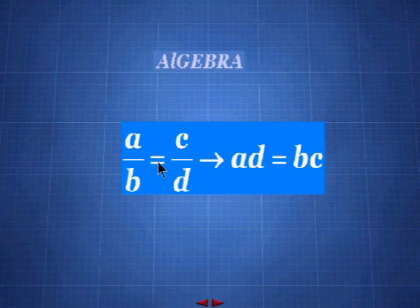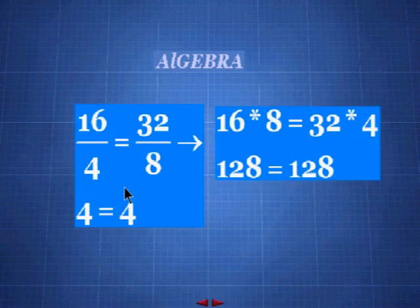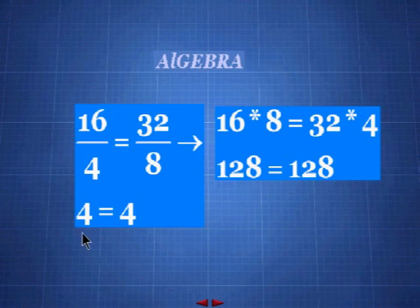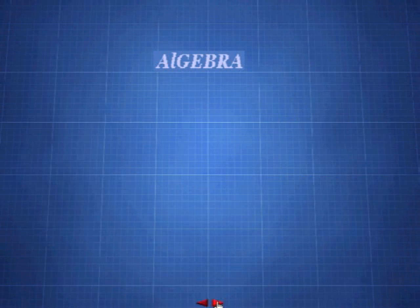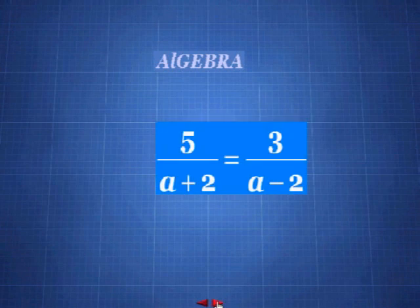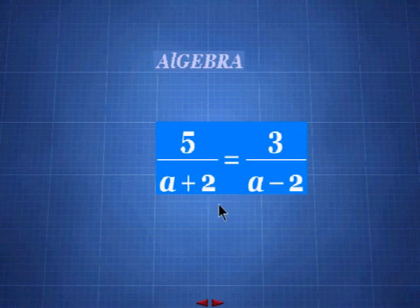As a bonus example showing that equality holds: 16 ÷ 4 = 4 and 32 ÷ 8 = 4, so when we cross-multiply the multiplications are equal as well. Now let's put it all to practice with an actual equation. We have: 5 ÷ (a + 2) = 3 ÷ (a − 2). Since we have two fractions on both sides, let's cross-multiply to simplify.